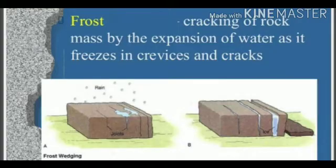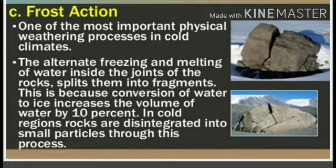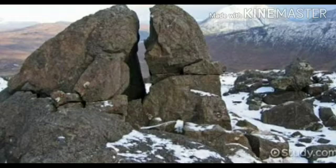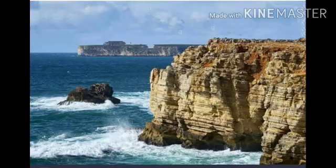The second cause is frost — one of the most important physical weathering processes in cold climates. The alternate freezing and melting of water inside the joints of rocks splits them into fragments. This is because conversion of water into ice increases the volume of water by 10%. In cold regions rocks are disintegrated into small particles through this process. As shown in the diagram, water accumulated in the cracks of rocks freezes, increasing volume, creating tension, and causing the rocks to shatter.